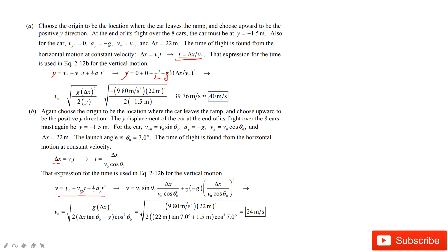We have v₀ cosine θ times t for the x component. For the y component, negative 1.5 equals v₀ sine θ times t minus one half g t squared. Then we solve the equation and find v₀ is 24 meters per second. Thank you.